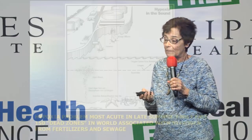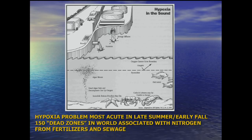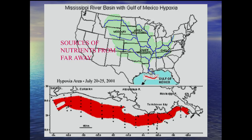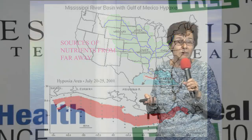There are areas called dead zones around the world, associated with excess nitrogen from fertilizers and sewage. The biggest dead zone in this country is in the Gulf of Mexico. Some years it's the size of Massachusetts; some years it's worse, the size of New Jersey. This is a vast area of the Gulf of Mexico where there's not enough oxygen for most life to exist. There may be just some bacteria, but you won't find fish or other marine animals living there because the oxygen is too low.